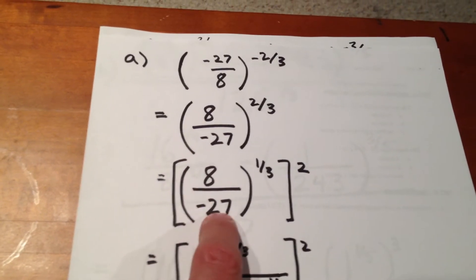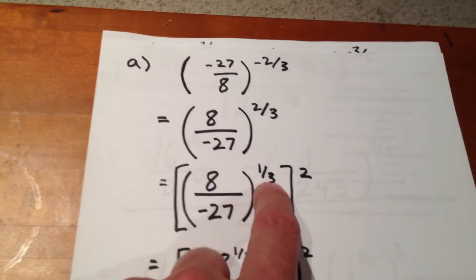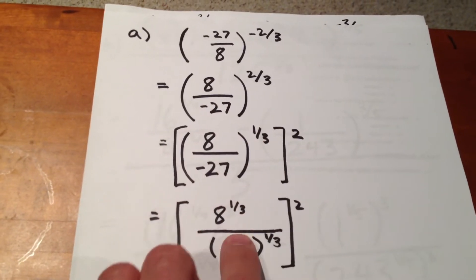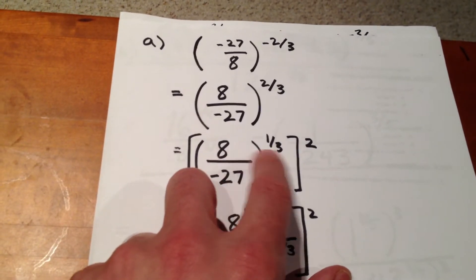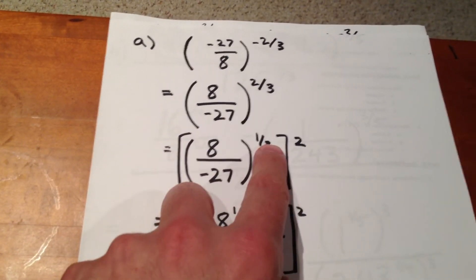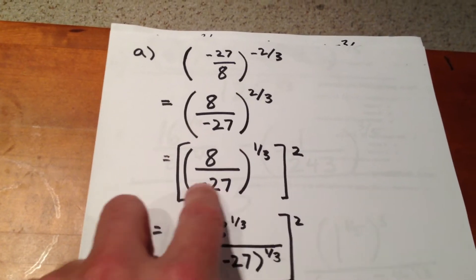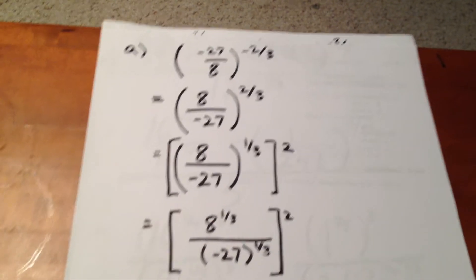While we have a fraction as our base and an exponent of one-third, what we can do is determine the third root of the numerator and the third root of the denominator in order to evaluate the interior of this square bracket.